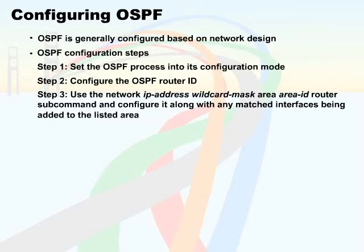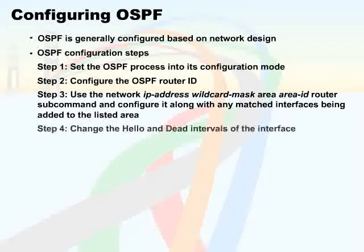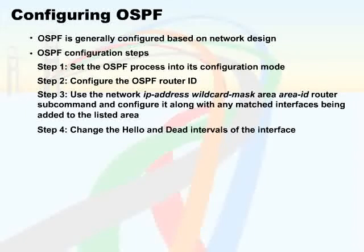Step 3 is to use the 'network ip-address wildcard-mask area area-id' router sub-command, configuring it along with any matched interfaces being added to the listed area. Step 4 involves changing the hello and dead intervals of the interface using the 'ip ospf hello-interval time' and 'ip ospf dead-interval time' interface sub-commands.